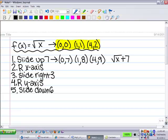And then I did reflect over the x-axis. And so then I made everything, all the y's, negative of the points. And then I put a negative in front of the square root of x plus seven.